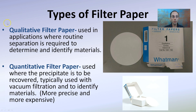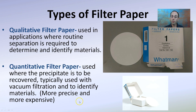There are also different types of filter paper. Qualitative filter paper is used in routine separation applications to identify materials. Quantitative filter paper is used where precipitates need to be recovered, typically with vacuum filtration, and to identify specific materials — it is more precise but also more expensive. If you don't need that high level of detail, you'll typically use qualitative filter paper. They're labeled right on the box as qualitative or quantitative.